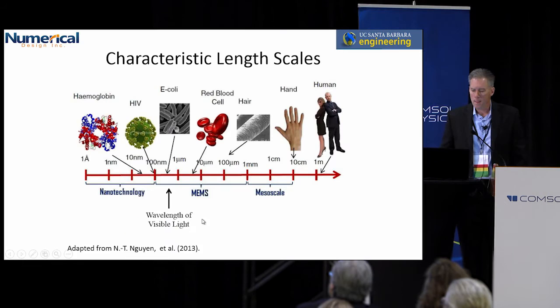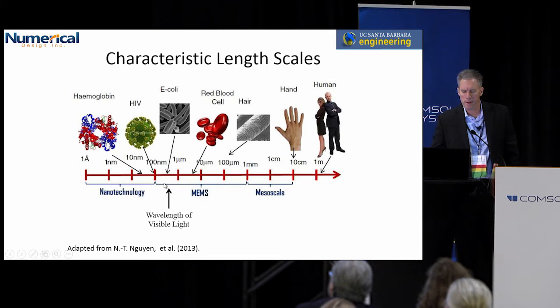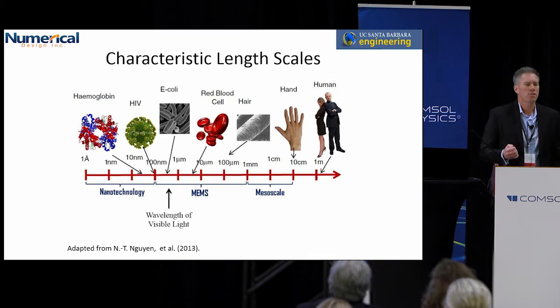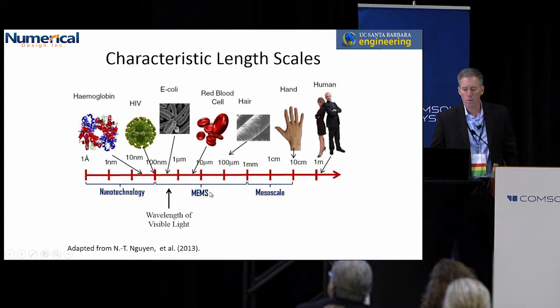The research that I typically do is in the length scale between 100 microns — typically the size of a human hair — and below that, down to about 100 nanometers, the size of a viral particle like HIV. That's the length scale I want to talk about today. It's really the length scale that most MEMS works at, a little bit larger than the nanotechnology area. The visible wavelength of light is about half a micron.